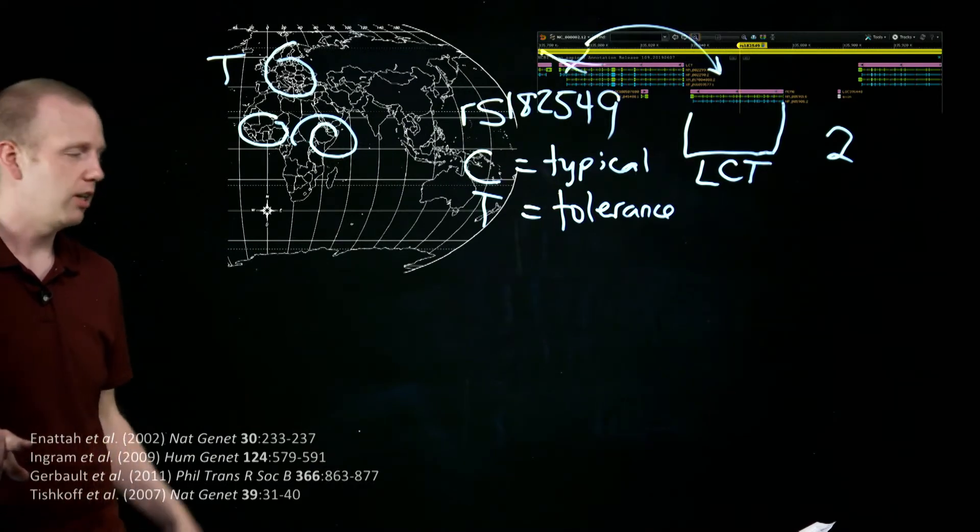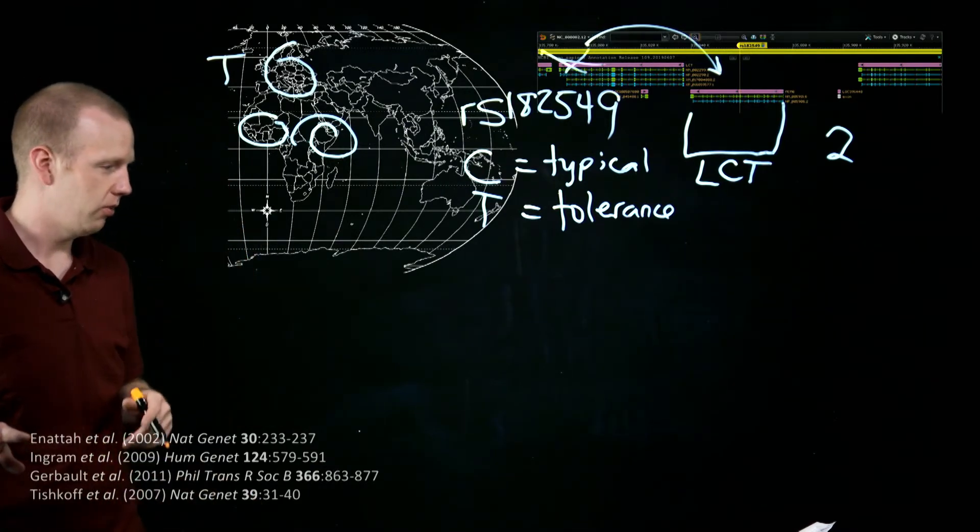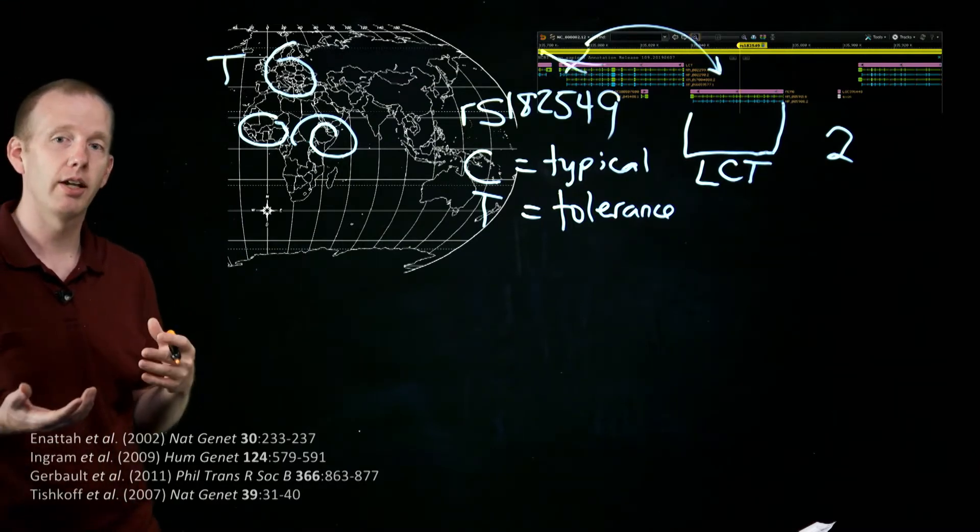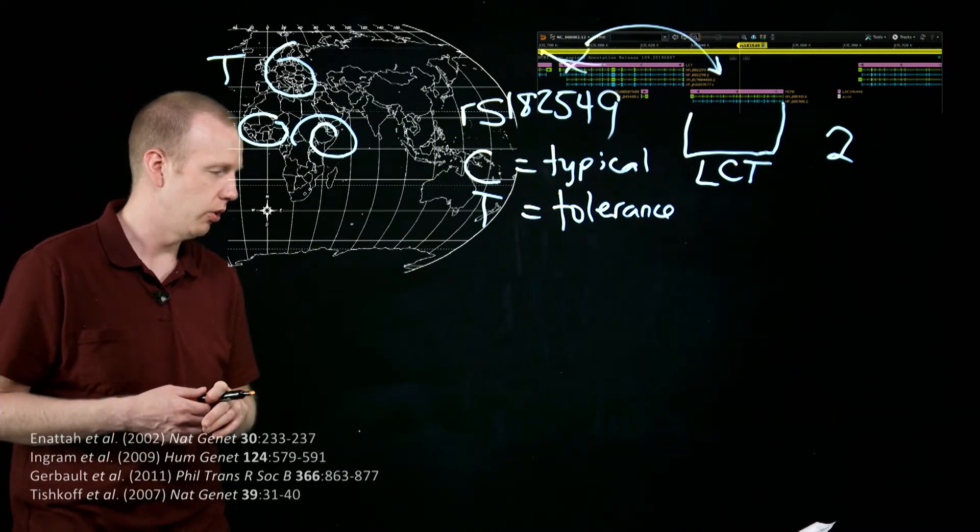The first publication is the identification of lactase, the C and the T types, as being related to lactase persistence, the ability to digest into adulthood.